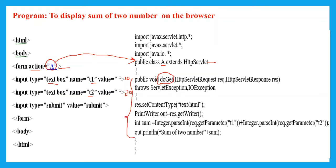The second argument is a response object belonging to the HttpServletResponse interface. The request interface is used to read the input parameter, while the response interface is used to send the response back to the user and display content on the browser. This method throws ServletException and IOException — the IOException is specifically due to the PrintWriter method. We handle this using the throws keyword.